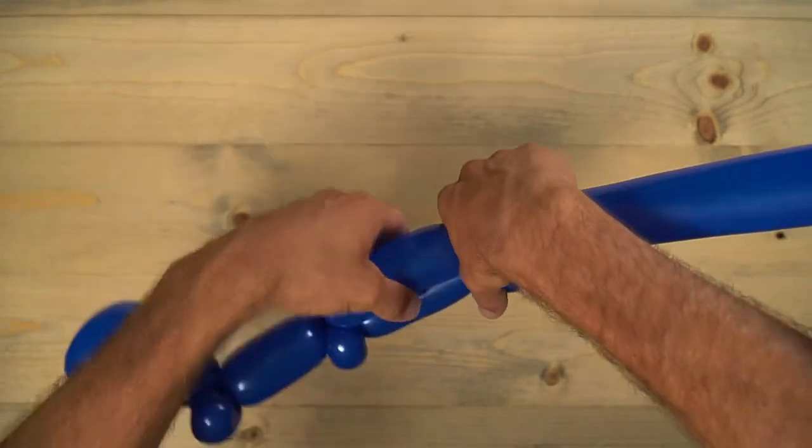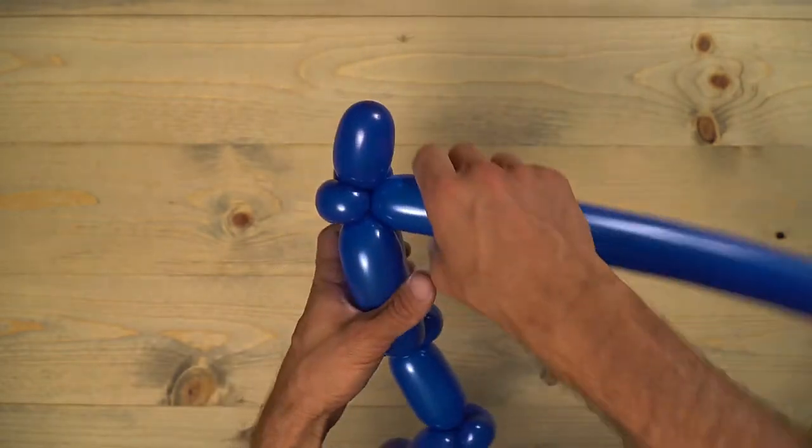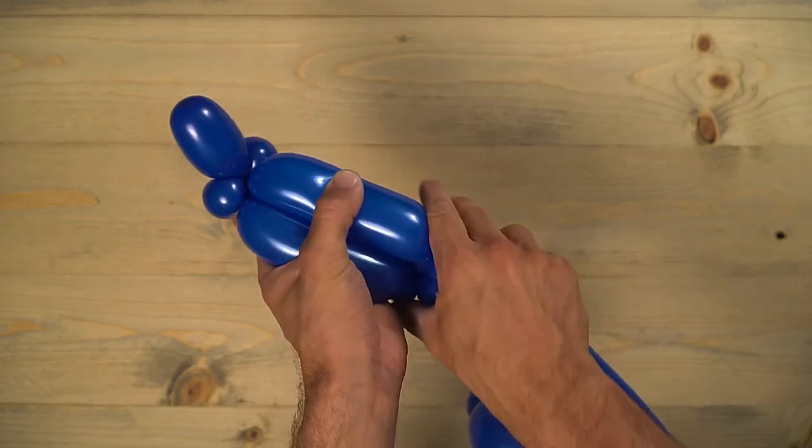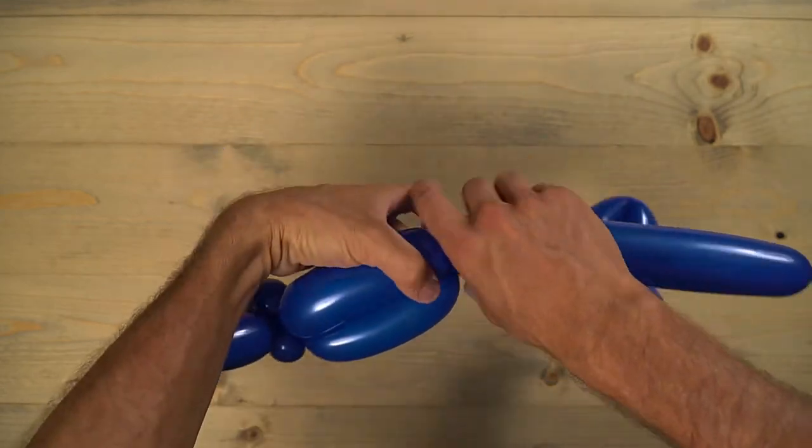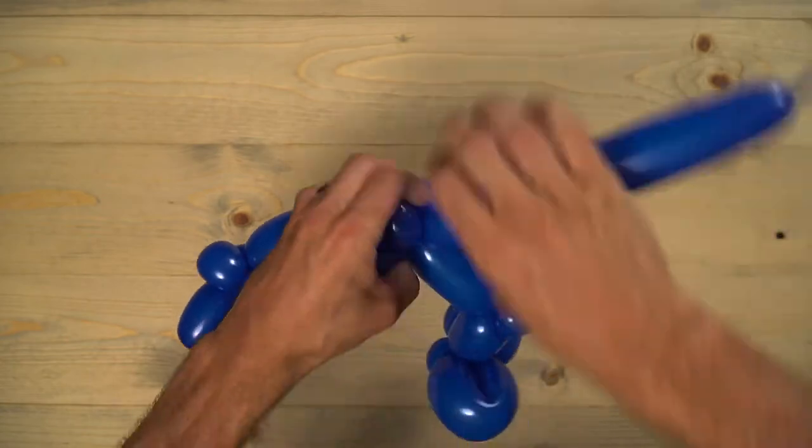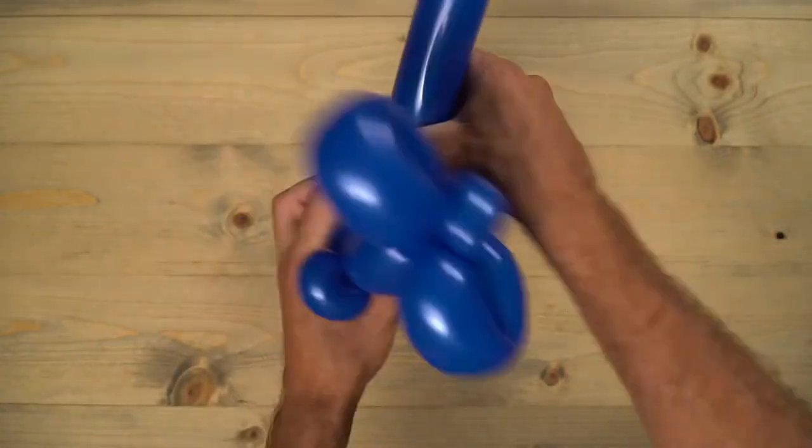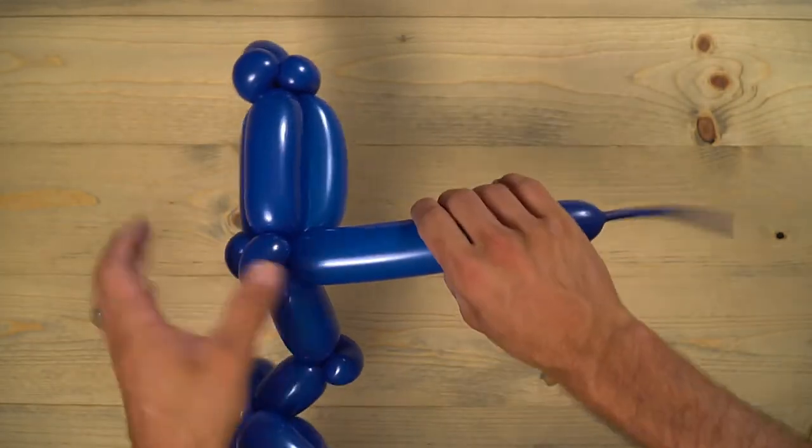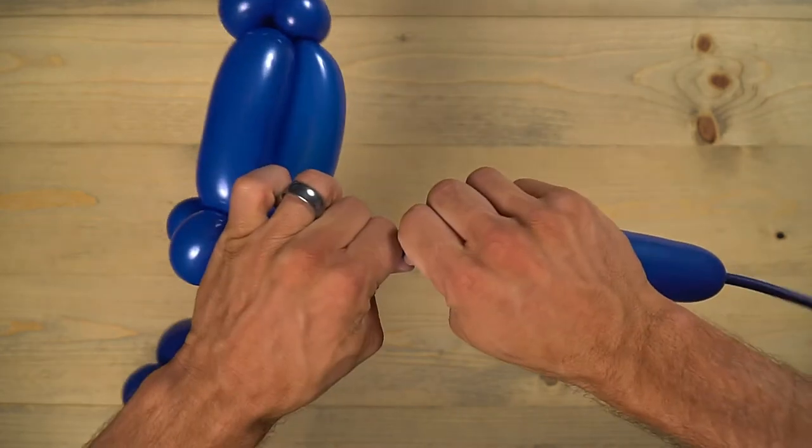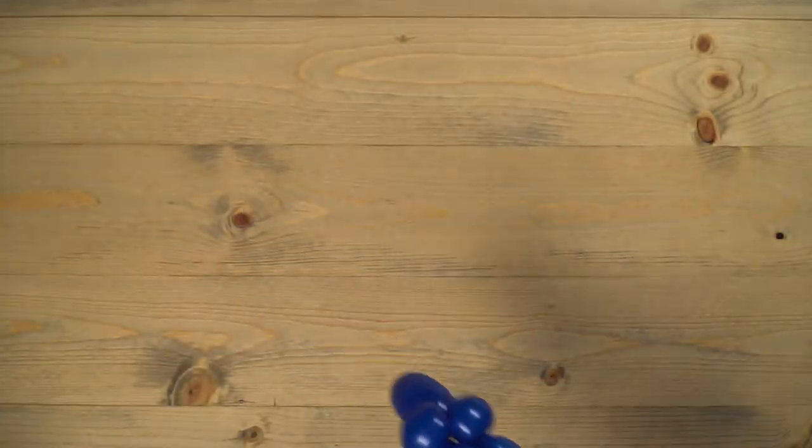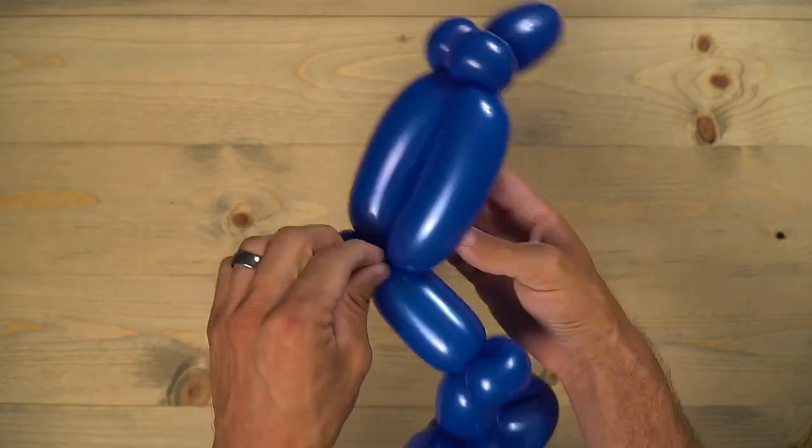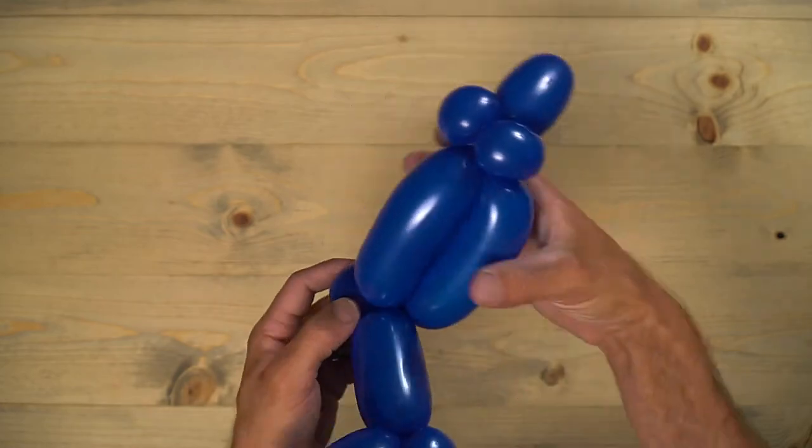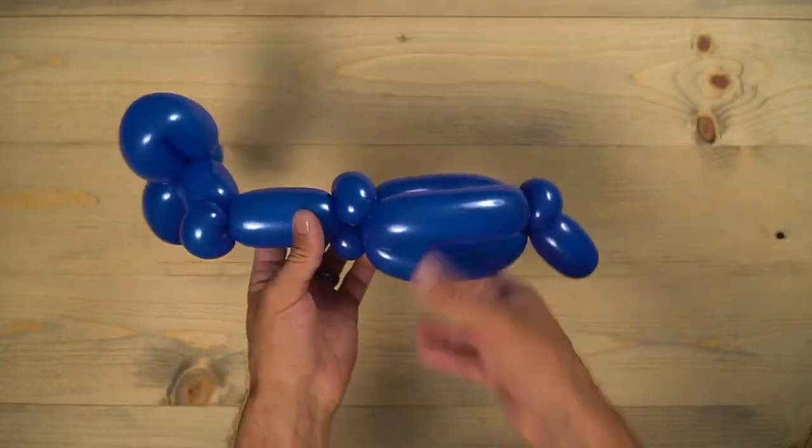And then do that one more time back over here. Get the same size and twist that in. We don't need that section. So we're going to tear that off. And then go ahead and push that in, tie it around. And then go ahead and reorganize as needed. Should look like this.